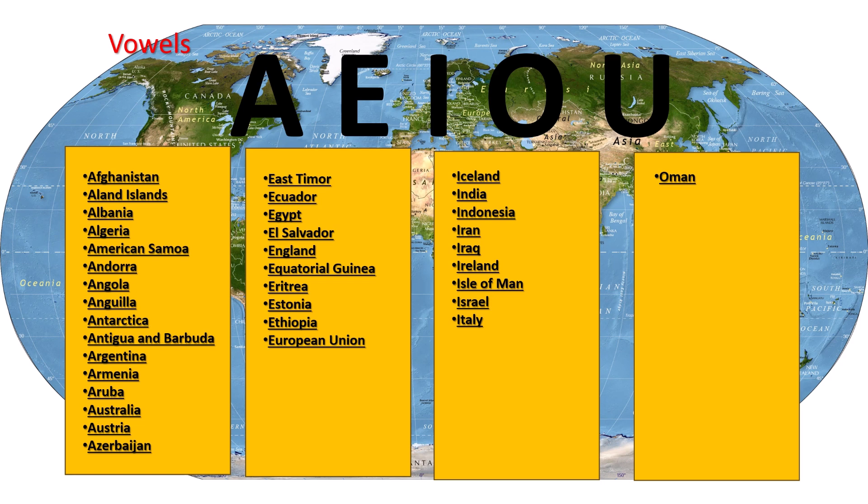Next up is E, which has East Timor, Ecuador, Egypt, El Salvador, England, Equatorial Guinea, Eritrea, Estonia, and Ethiopia. We also have the European Union.